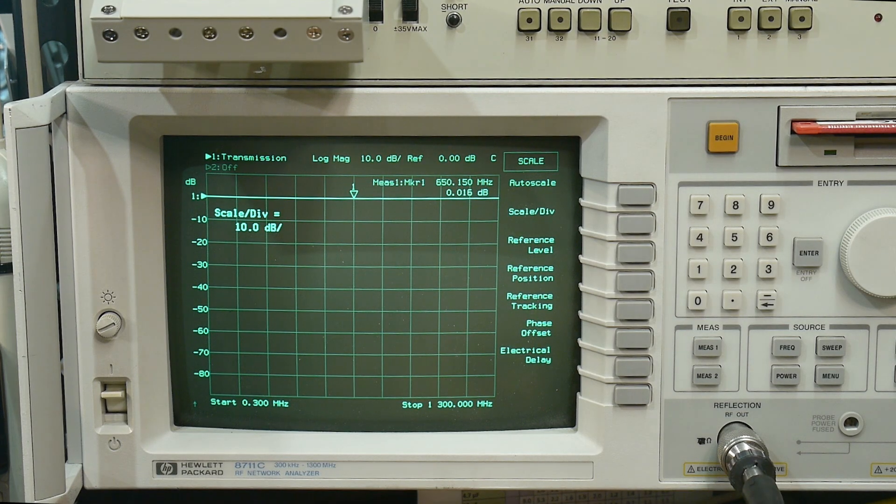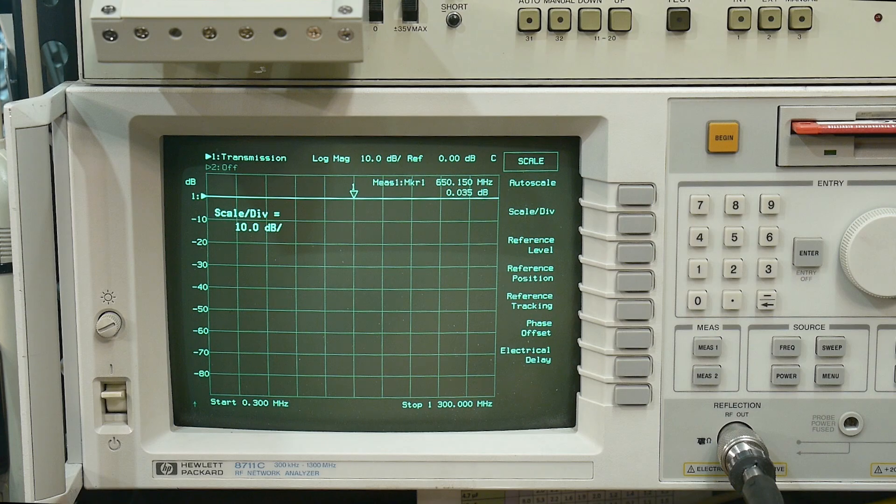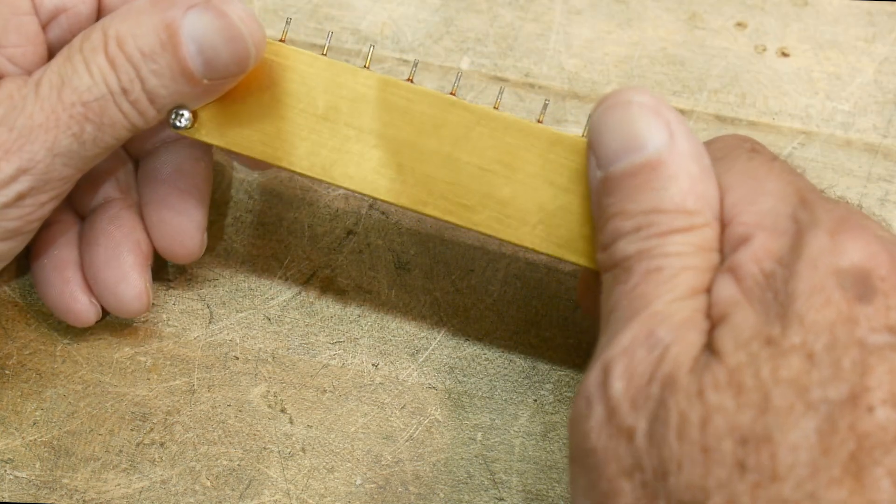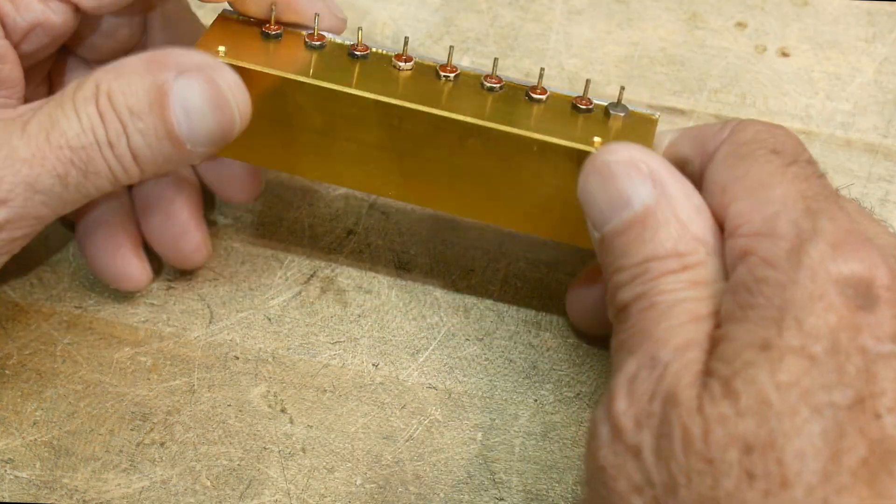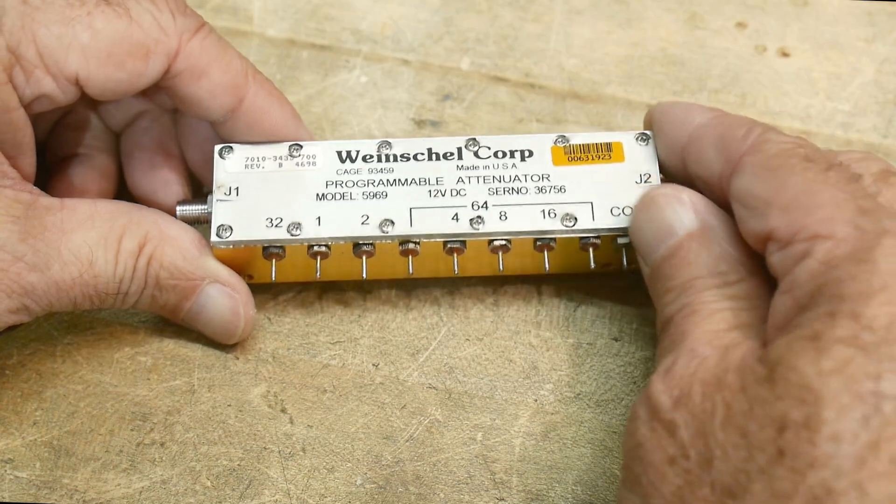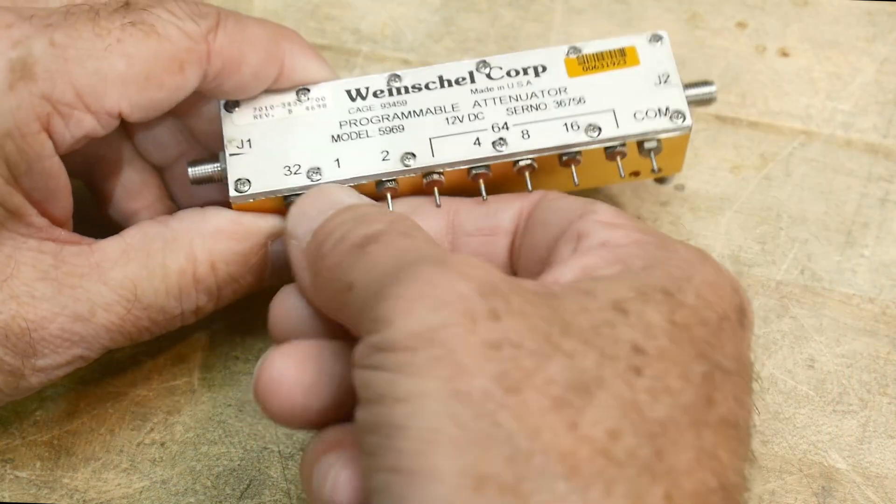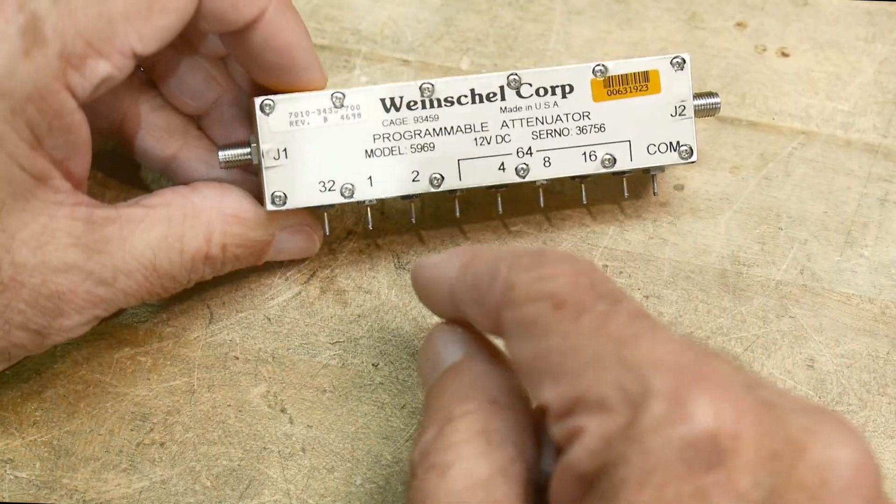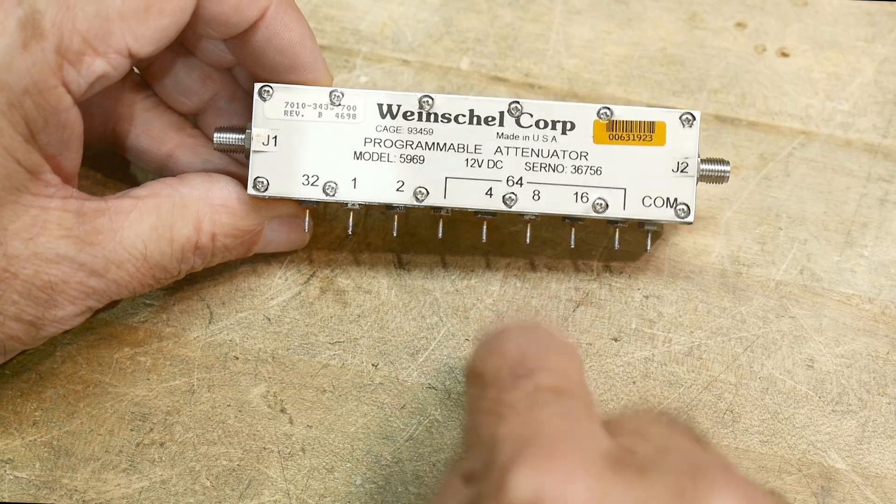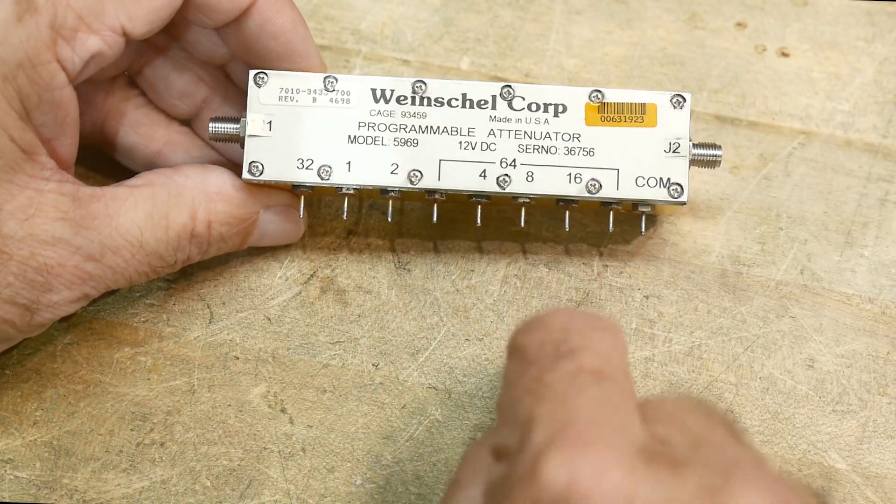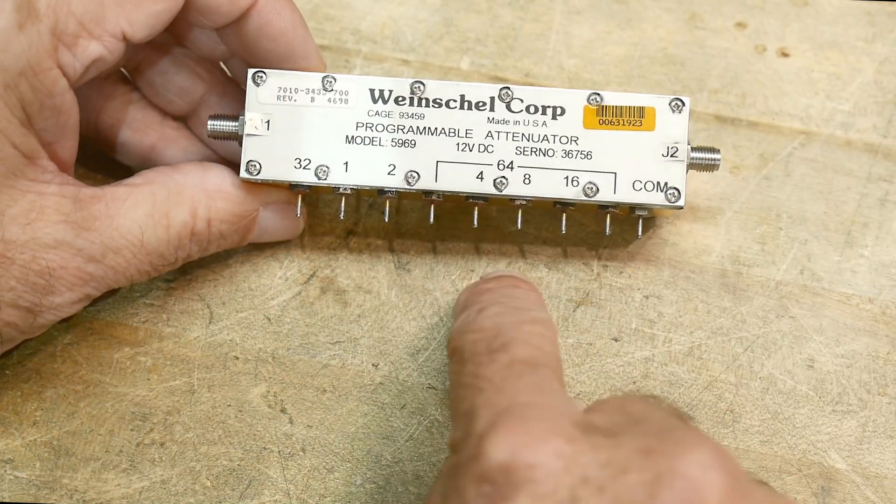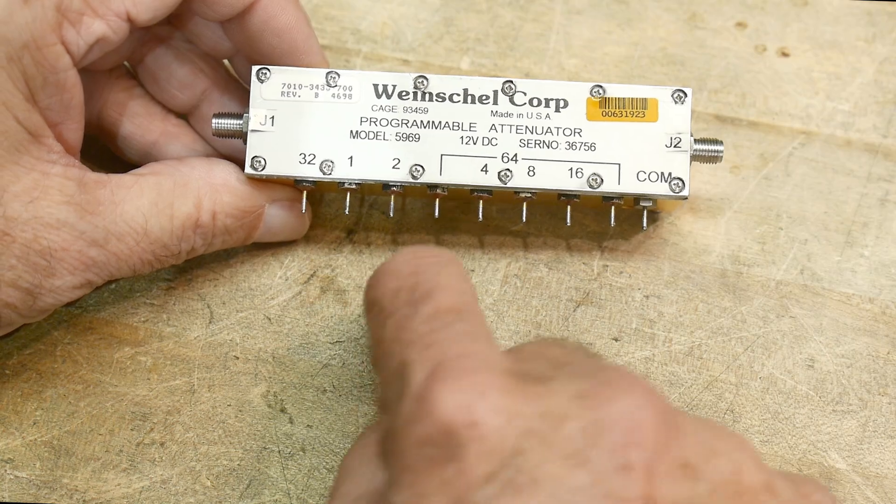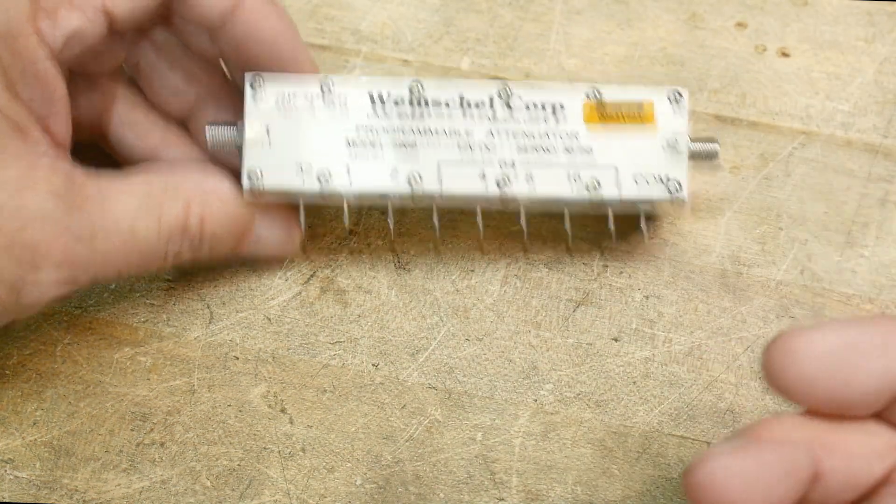All right. So I want to use this thing. It is so nice. It deserves a controller. So what I'm thinking of doing is laying out a PC board that will connect to the pins here. So it'll be a long PC board and then it'll have, I think up and down arrow keys, buttons to go up and down, and then maybe a display that tells you what attenuation setting you have, maybe 120. So a three digit display.